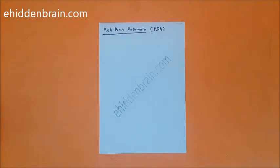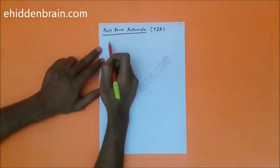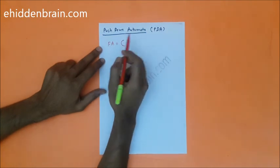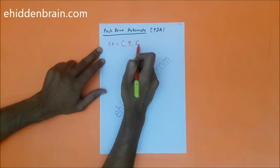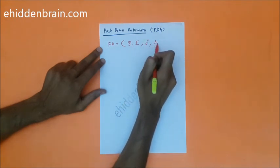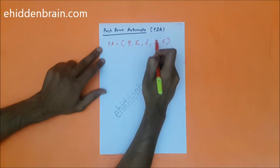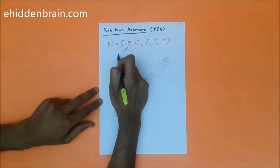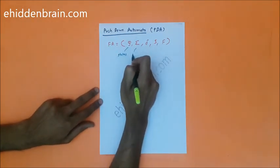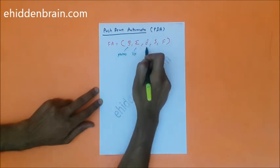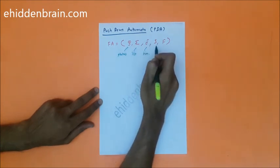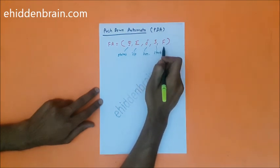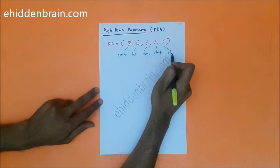Before going further, let's see the definition of finite automata. Finite automata is a five-tuple machine: set of states, input alphabets, transition function, start state, and the set of final states. This is what finite automata looks like.